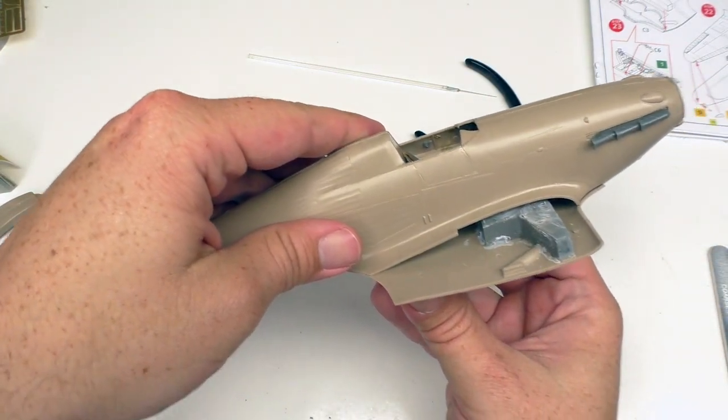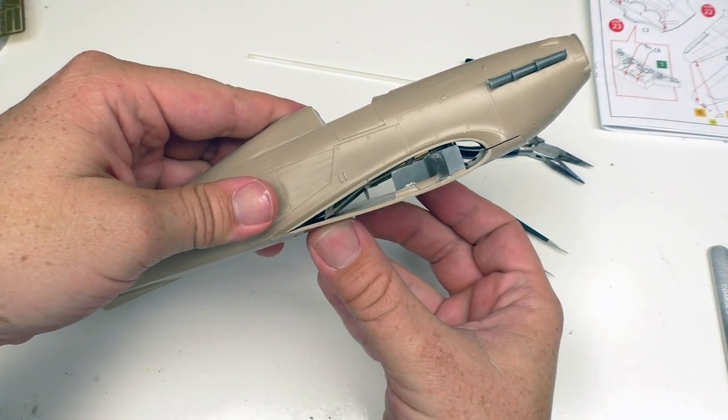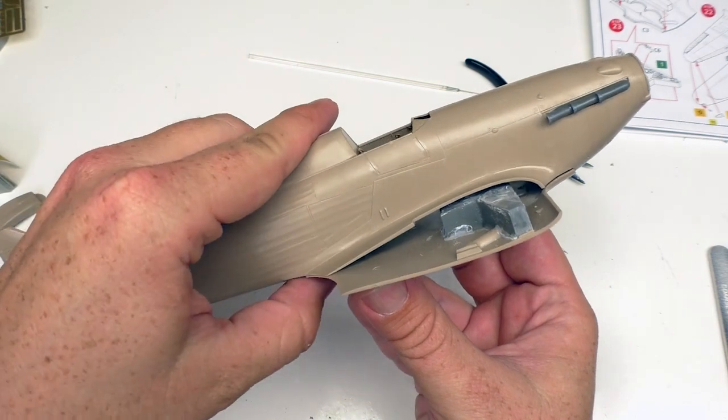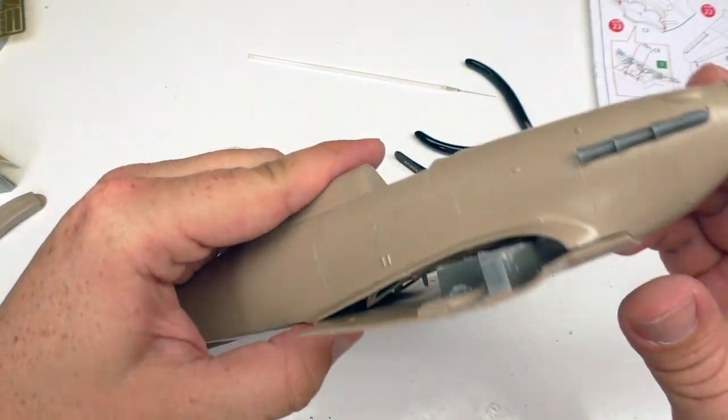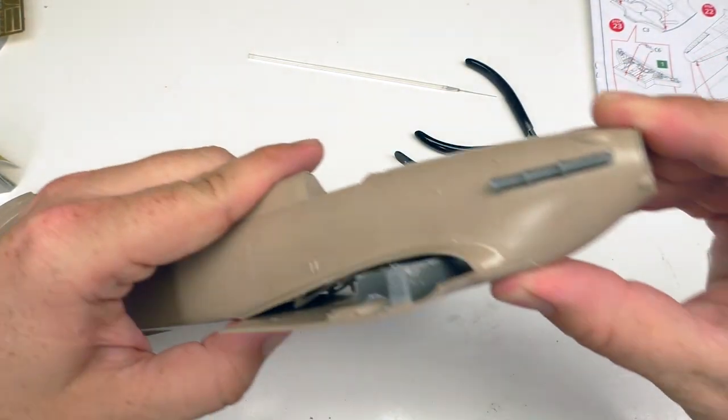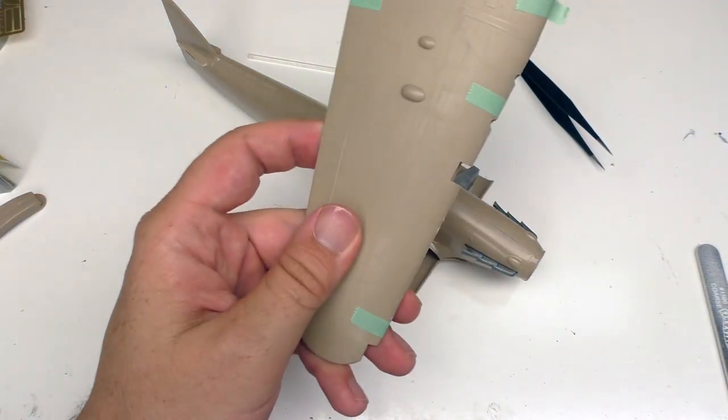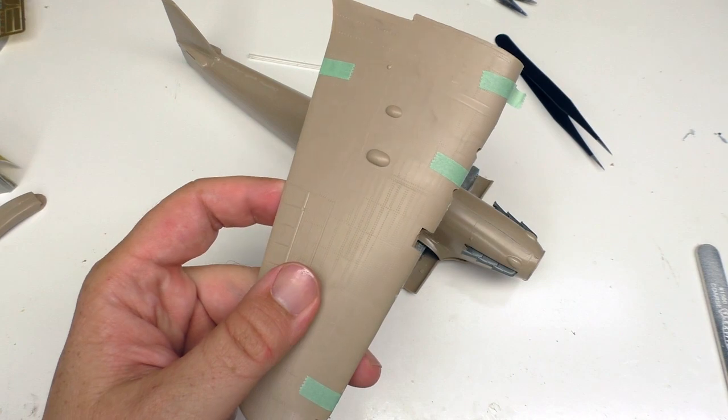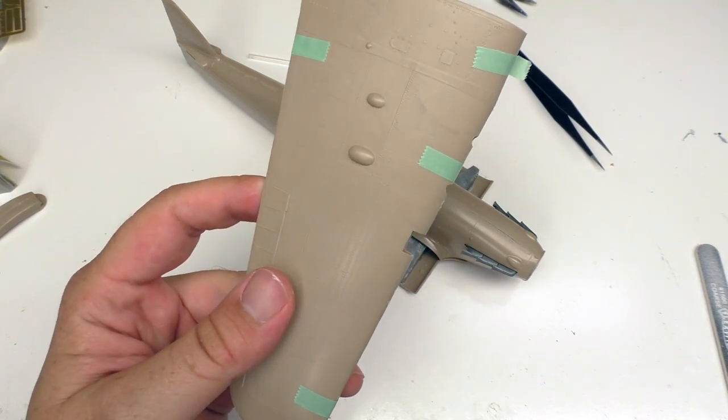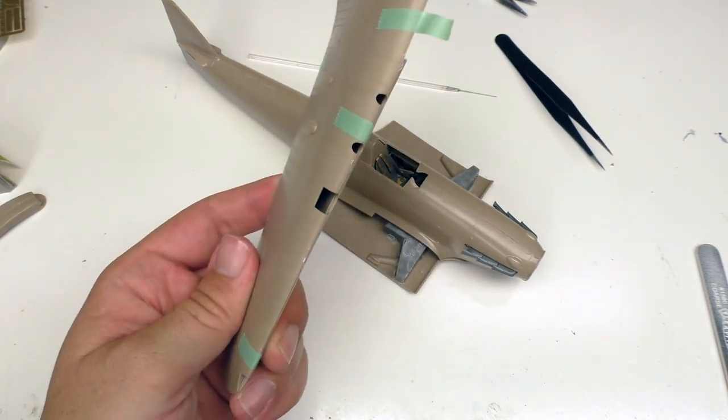Now, as you can see, clearance in here is tight, but it certainly fits. With a tiny little bit of pressure, all of this stuff lines up quite nicely. Where the fun comes in is with the wings. As you can see, the detail on these is gorgeous. We'll talk about that again later.